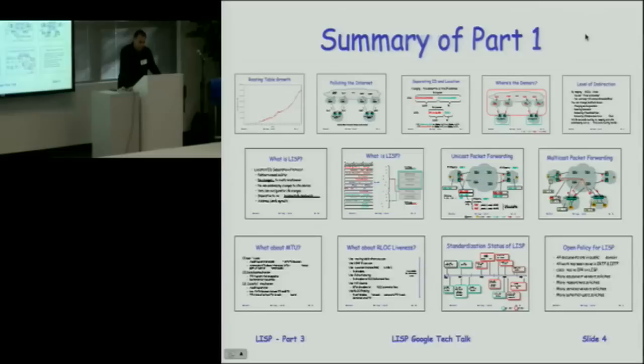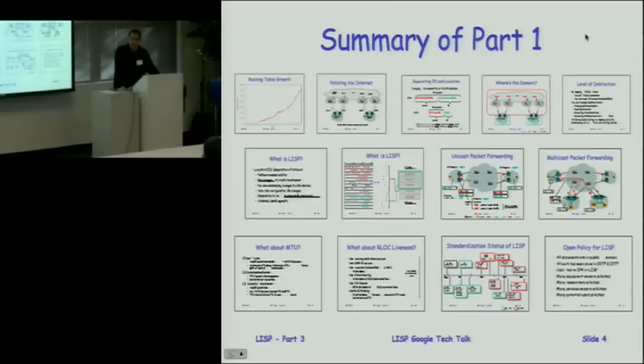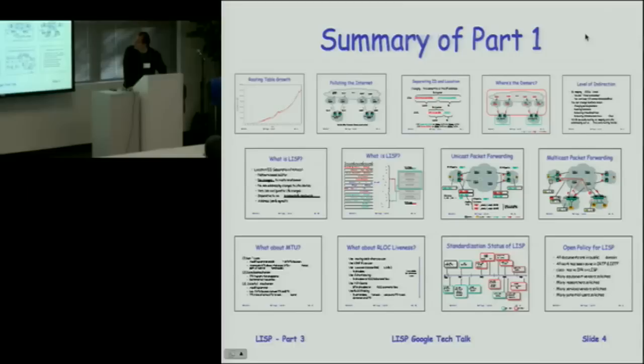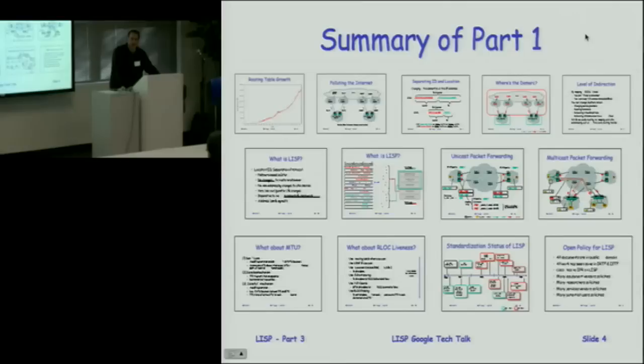We talked about how you separate ID from location, and the DMAC point is where the LISP encapsulators and decapsulators are. The level of indirection that LISP provides is that you can keep EID addresses fixed while you are able to change the locators, so you don't have to re-number sites, systems, or virtual machines. We have a mapping between an EID and a set of RLOCs which is part of the mapping database. We gave examples of unicast and multicast packet forwarding, talked about MTU issues with encapsulation, and locator liveness — how do you know if a locator is up and should be used versus another locator in the set?